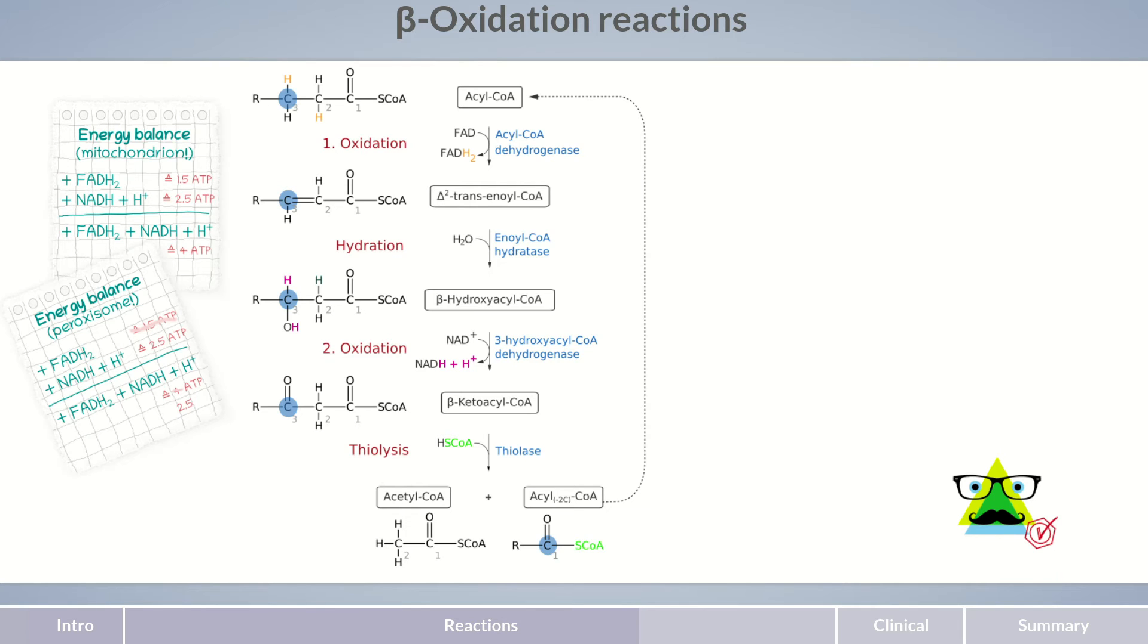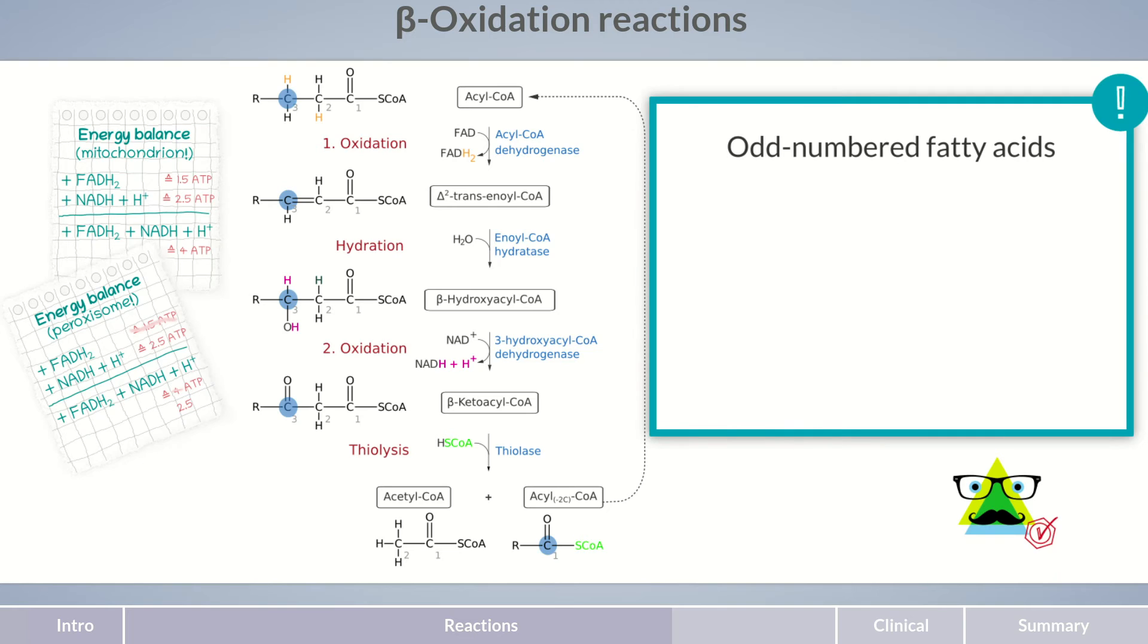Have you asked yourself the following on the beta-oxidation reactions? What happens to a fatty acid with an odd number of carbon atoms that can't be completely cleaved into acetyl-CoA? Well, let's go through the answers. For fatty acids with an odd number of carbon atoms, the final cleavage step results in a remaining C3 unit termed propionyl-CoA. This is then converted into succinyl-CoA, an intermediate in the citric acid cycle, where it can be further metabolized.